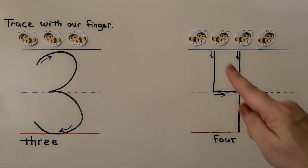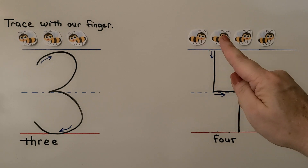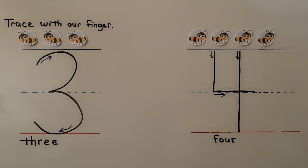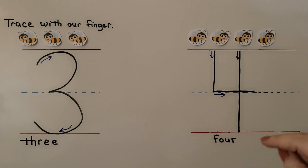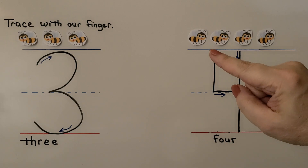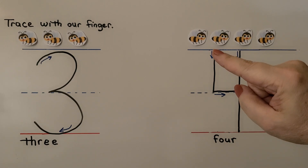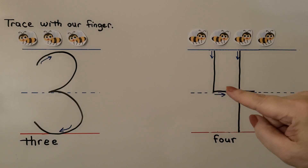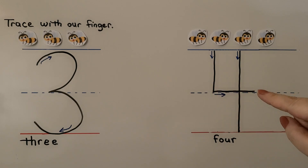Here we have one, two, three, four bumblebees. We can write the number four. Here's the word four. We start here, we come down, and then we come across.